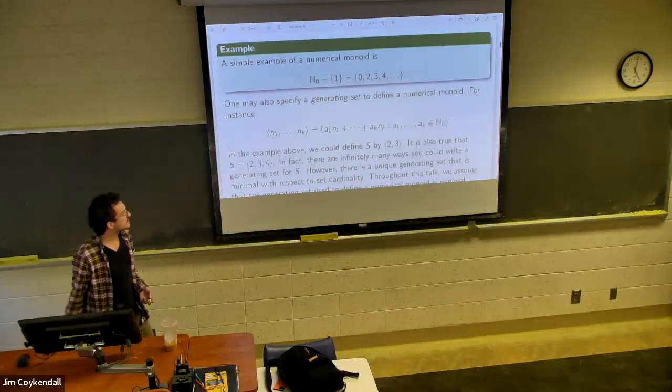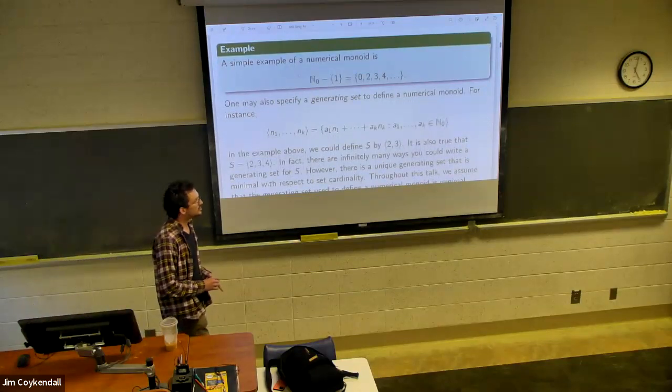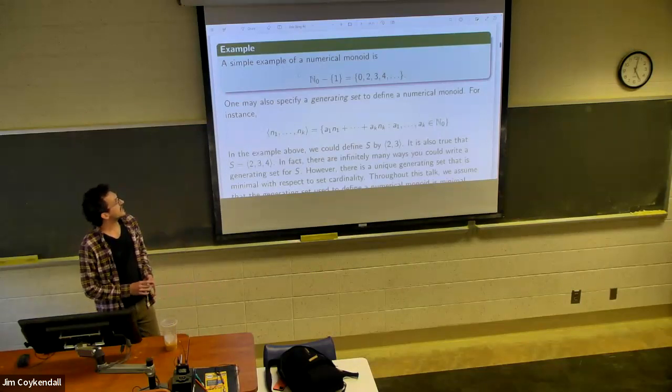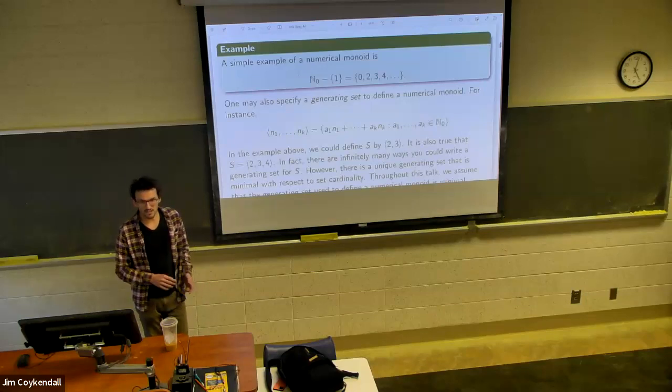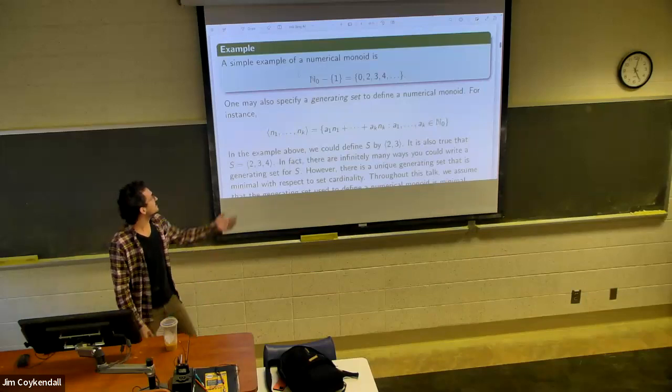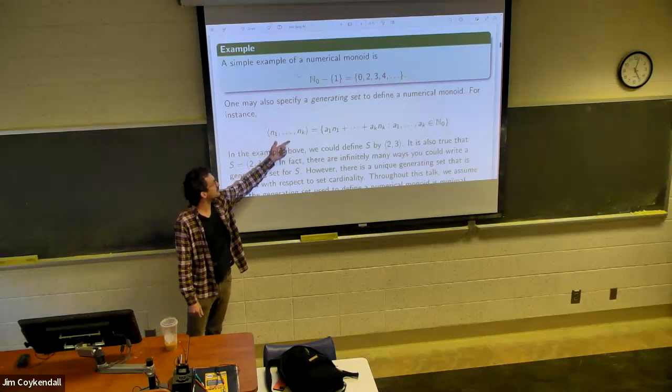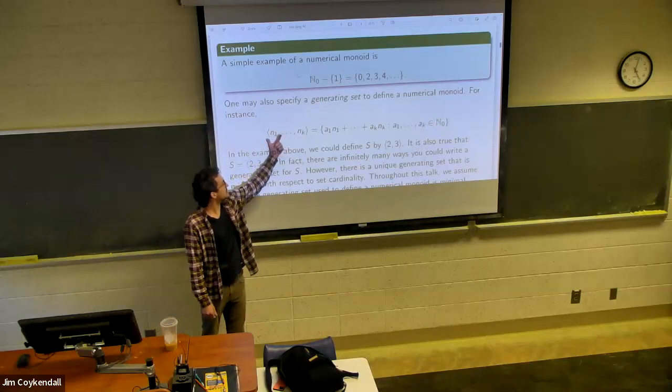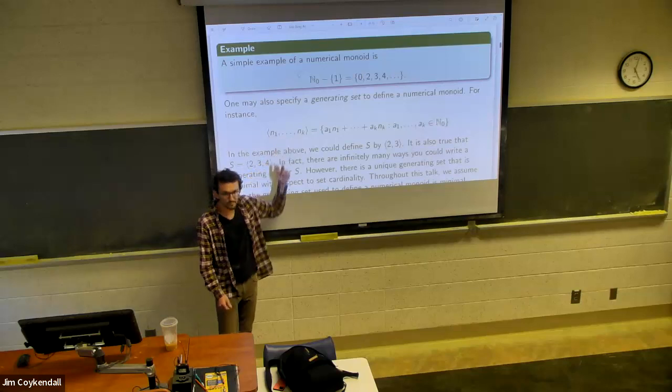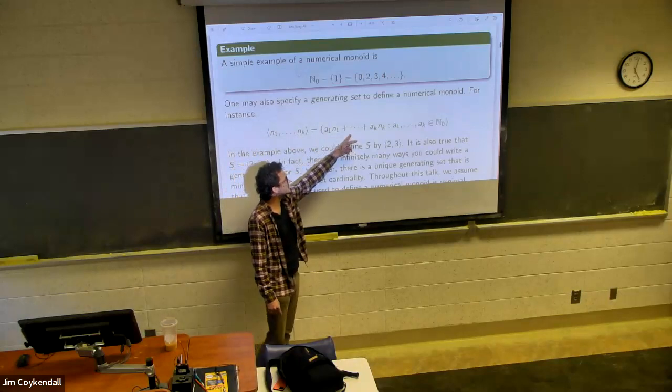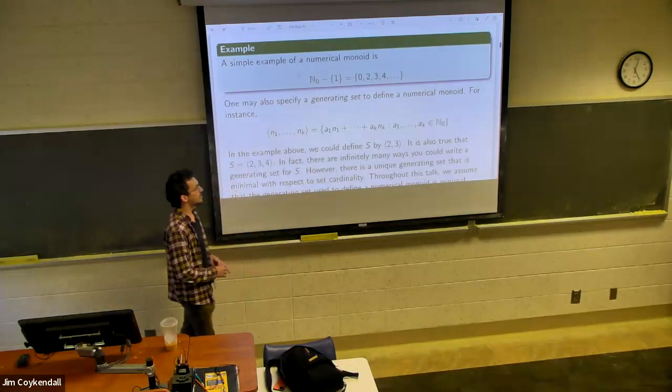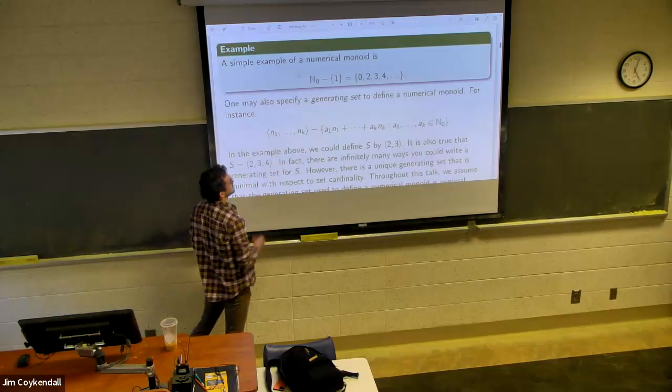So a great example is the non-negative integers, and we just take away the one, and so you get this: 0, 2, 3, 4, 5, 6, blah, blah, blah. It's convenient to define based on generators. So we use this notation with the angle brackets to define it. And that's just saying all the linear combinations with positive coefficients of the generators specified.